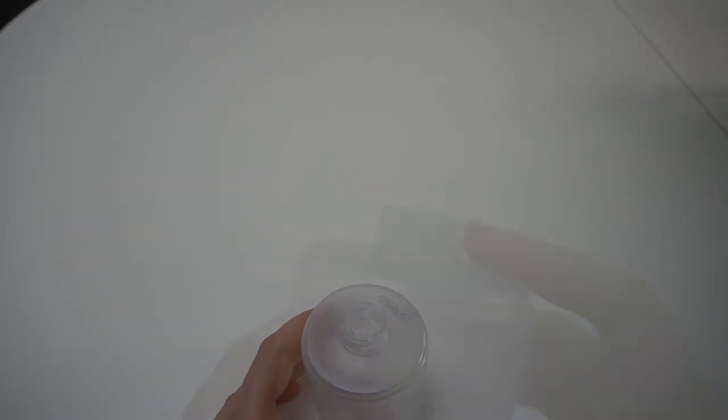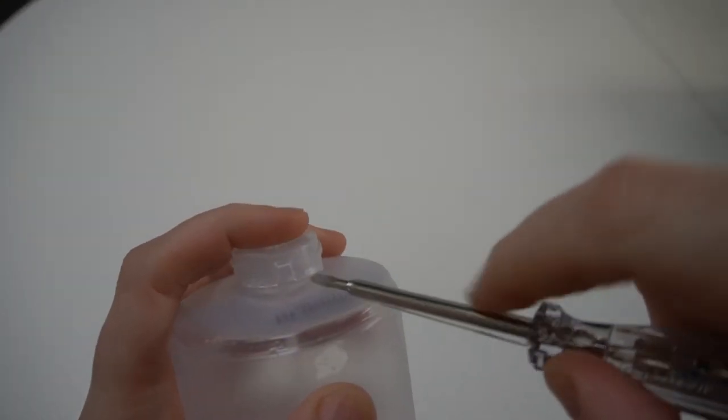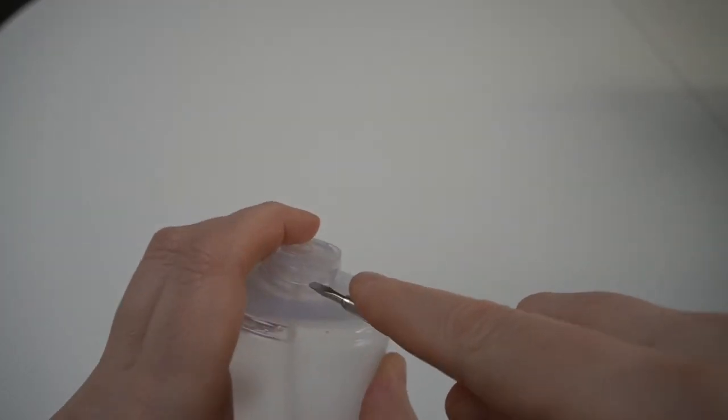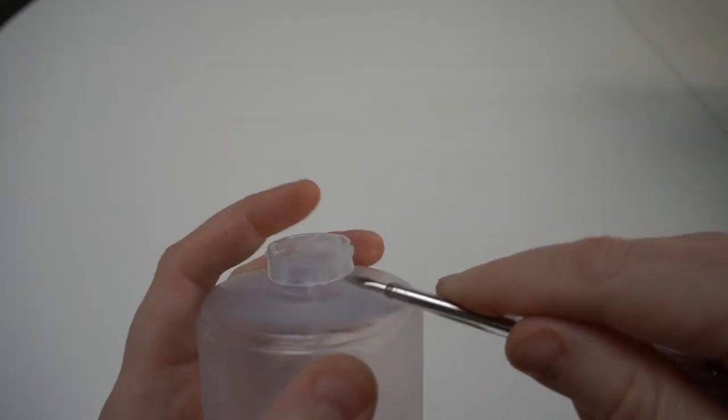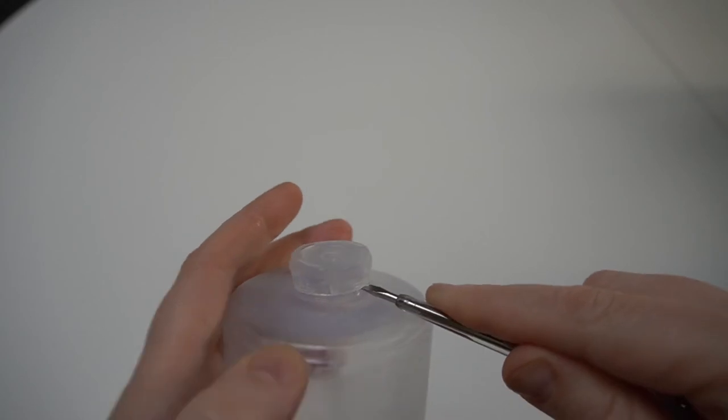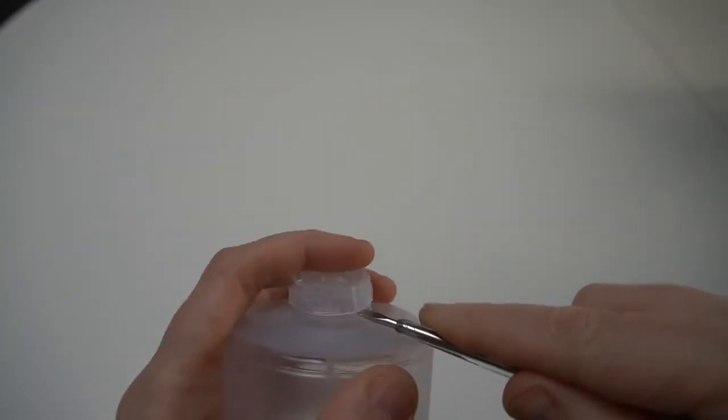Then we need a flat screwdriver to gently pry the lid from the container. You need to go around the entire lid and gently just push it upwards. Like this.